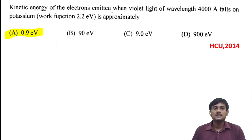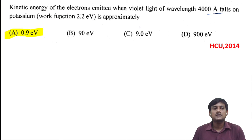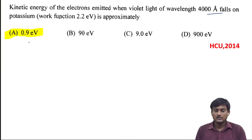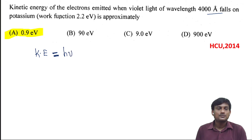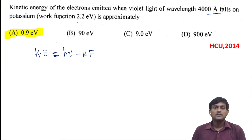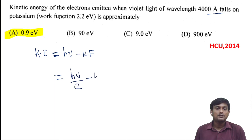Next question: kinetic energy of electrons emitted when violet light of wavelength 4000 angstroms falls on potassium. The work function is given as 2.2 electron volts. From the photoelectric effect equation, kinetic energy equals hν minus the work function. Since the values are given in electron volts, we divide hν by the charge of the electron.